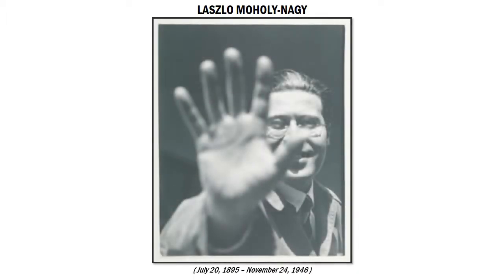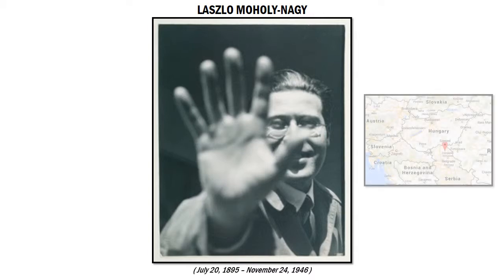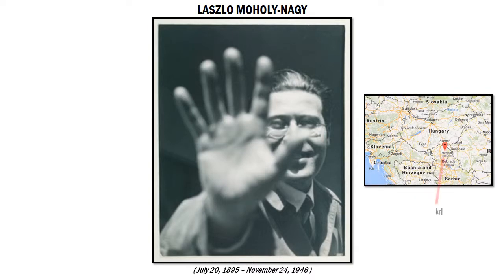Laszlo Moholy-Nagy was born in the southern part of Hungary in the year 1895. Born Laszlo Weiss, he later changed his surname to Nagy. Moholy was later added after the town Moholy, which is now modern-day Serbia, where he spent most of his childhood.